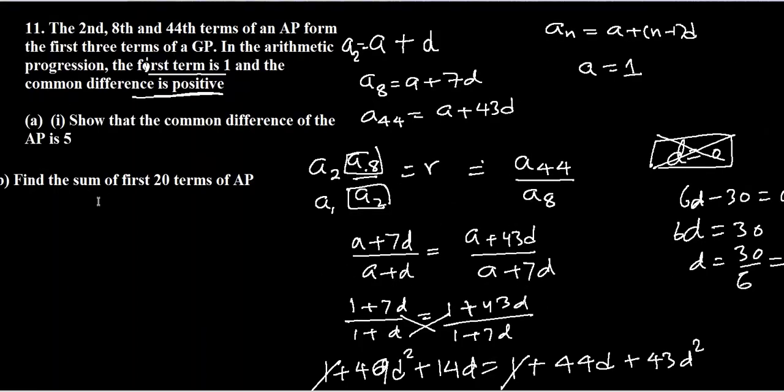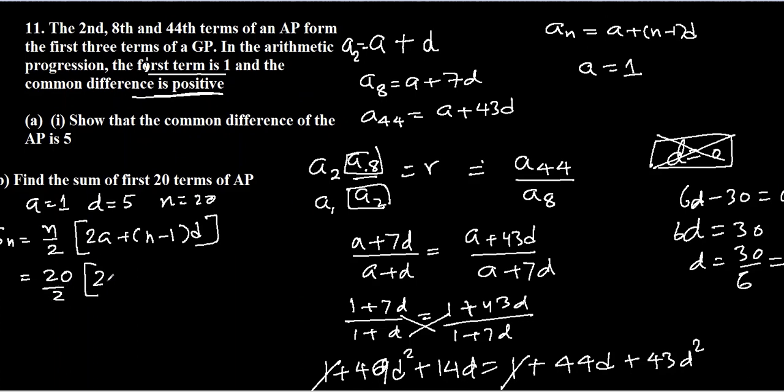In the next part, they are asking us to find the sum of first 20 terms of AP. We know that a is 1, D is 5, and n is 20. The formula is S_n equals n over 2 times 2a plus n minus 1 times D. So we substitute: 20 over 2 times 2 times 1 plus 20 minus 1 times 5, which is 10 times 2 plus 19 times 5, which is 10 times 97, and the sum will be 970.